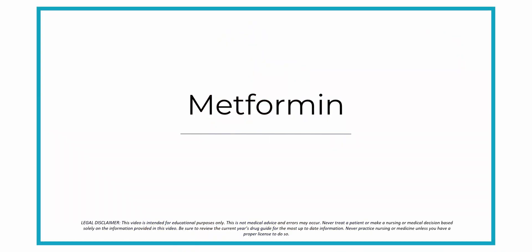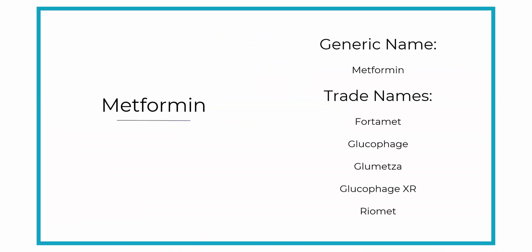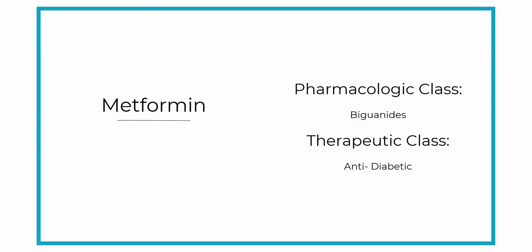Let's talk about metformin. The generic name is metformin and the trade names are Fortimet, Glucophage, Glumetza, Glucophage XR, and Ryomet. The pharmacologic class of metformin is a biguanide and the therapeutic class is an anti-diabetic.